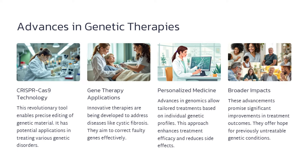CRISPR-Cas9 is a revolutionary gene editing tool that allows us to precisely modify genetic material. This technology has immense potential in treating various genetic disorders by correcting faulty genes. Gene therapy applications are being developed to address diseases like cystic fibrosis, aiming to effectively correct the underlying genetic issues. Advances in genomics are enabling personalized medicine where treatments can be tailored to an individual's unique genetic profile, enhancing treatment efficacy and reducing side effects compared to one-size-fits-all solutions.